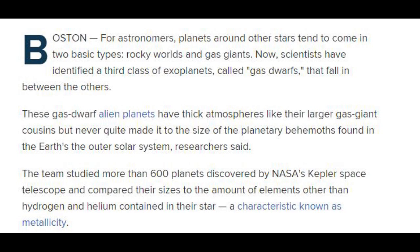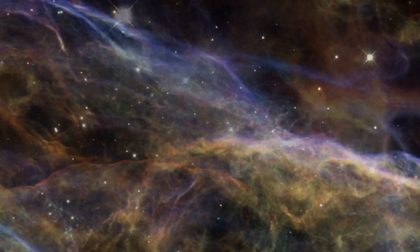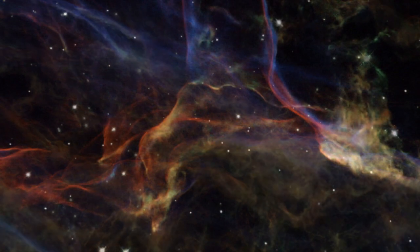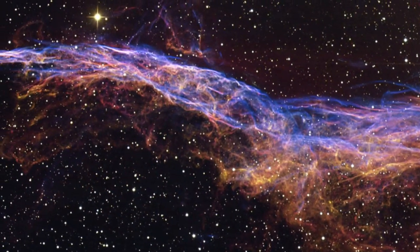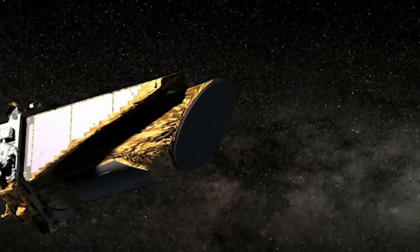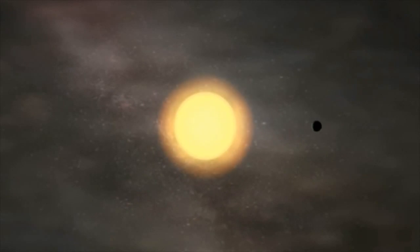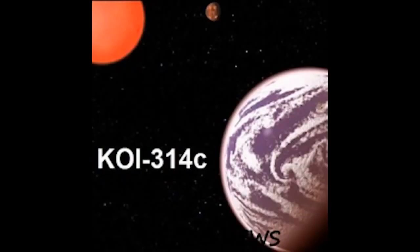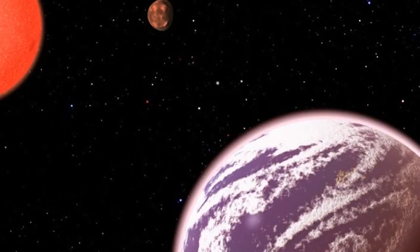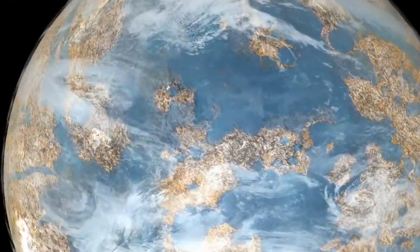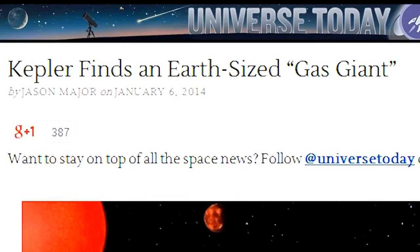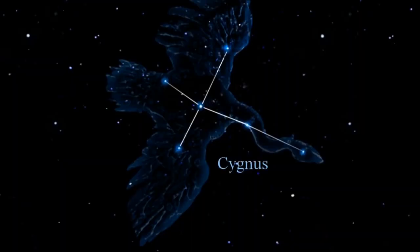But they never quite made it to the size of the planetary behemoths. Behemoths. Found in the Earth's outer solar system, researchers said. The team studied more than 600 planets discovered by NASA's badass super science robot camera, the Kepler Space Telescope. And the team then compared their sizes to the amount of elements other than hydrogen and helium contained in their star, a characteristic known as metallicity.